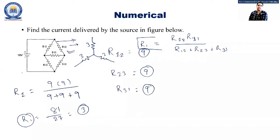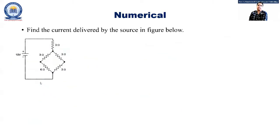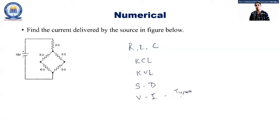We also saw how to convert star into delta using the same three equations — multiplying them to obtain three more equations for star-to-delta transformation. A numerical was also covered showing how to simplify a given circuit and calculate current or resistance as might be asked in the GTU examination. Topics covered so far include RLC elements, KCL, KVL, star-delta transformations, and voltage and current sources.